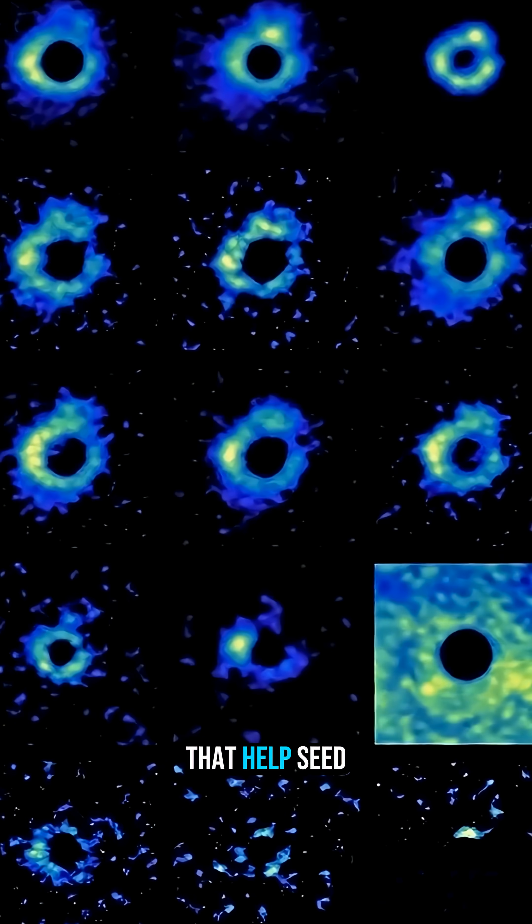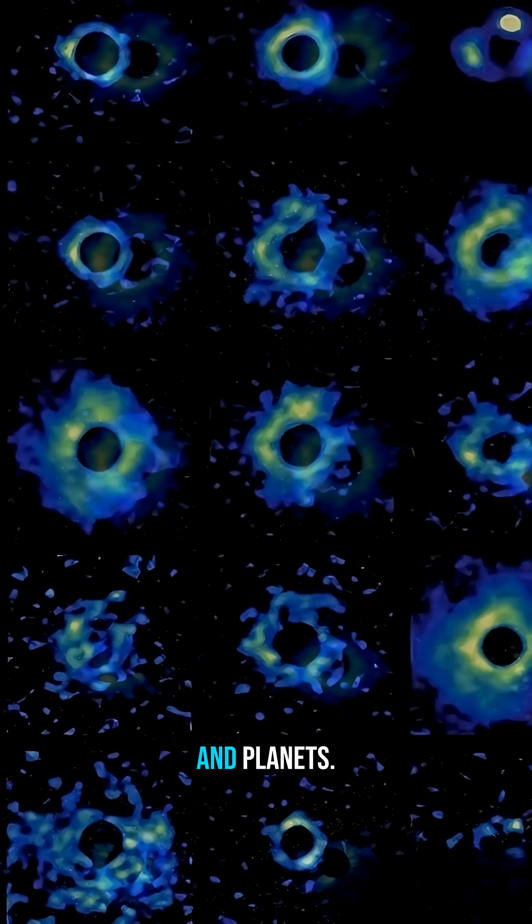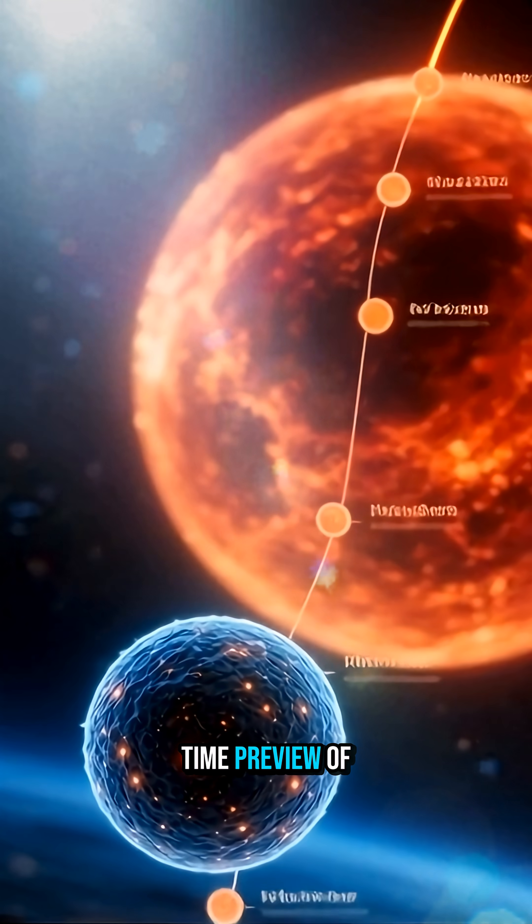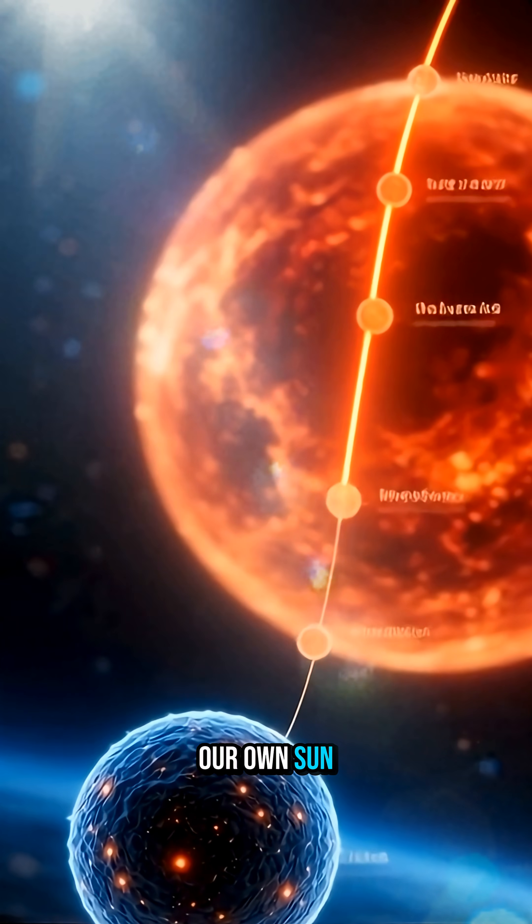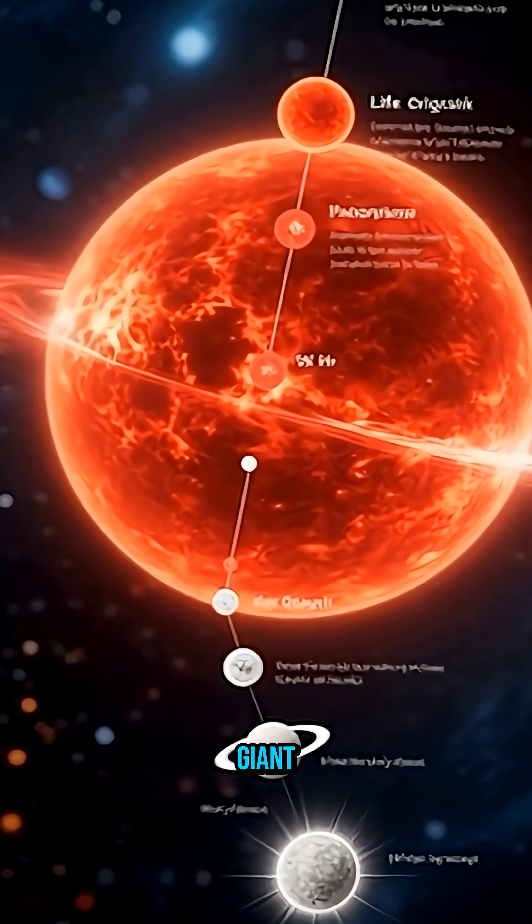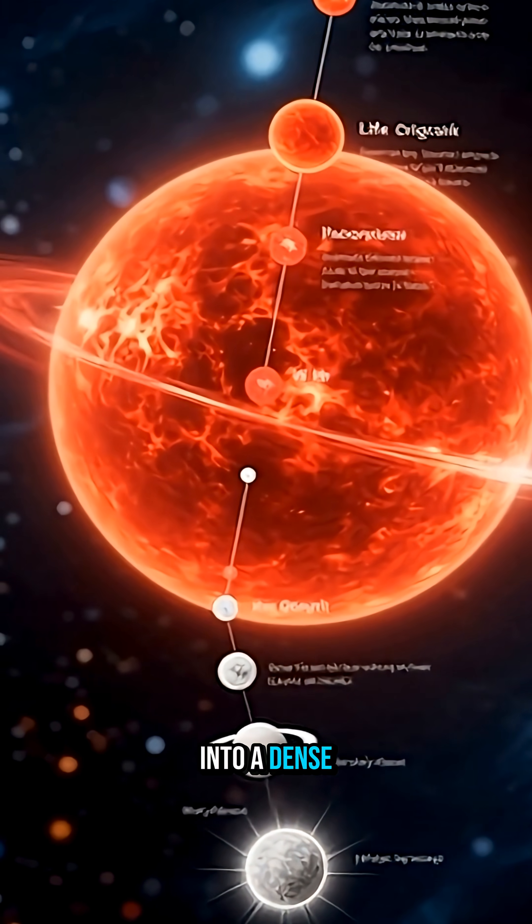These processes help seed the galaxy with the raw materials for new stars and planets. W. Hydrae is giving astronomers a real-time preview of how stars like our own Sun will behave billions of years from now, when it expands into a red giant and ultimately fades into a dense white dwarf.